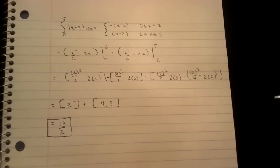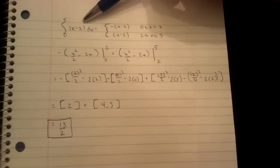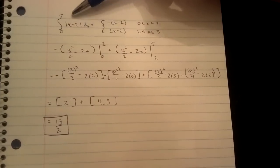Today we're finding the definite integral of the absolute value of x minus 2, from 0 to 5.